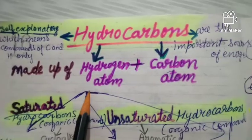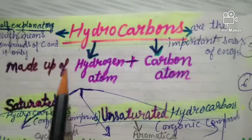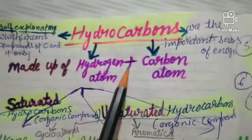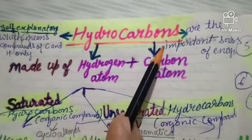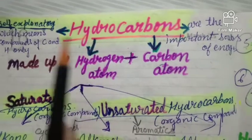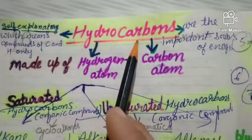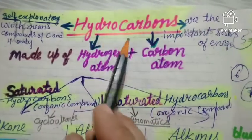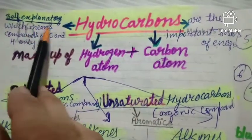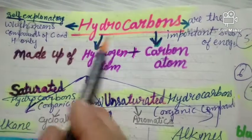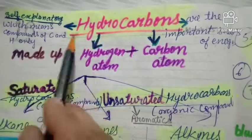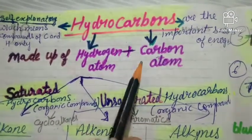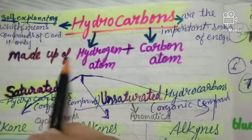Hello friends, welcome to my channel JMB Rudraksh Science Classes. Today I will discuss with you the topic of hydrocarbons from the chapter Carbon and Its Compounds. Hydrocarbons are important sources of energy. The term hydrocarbons is self-explanatory: 'hydro' means hydrogen and 'carbon' means carbon, so hydrocarbons are made up of hydrogen and carbon atoms only.